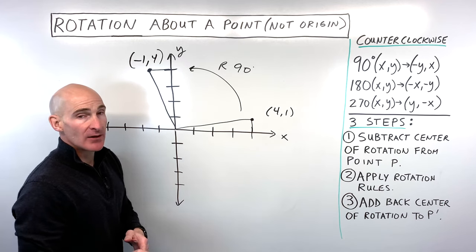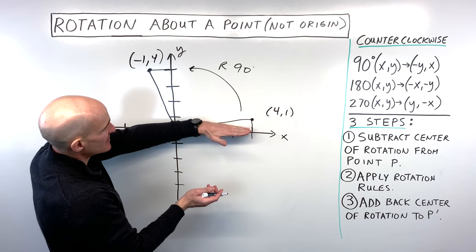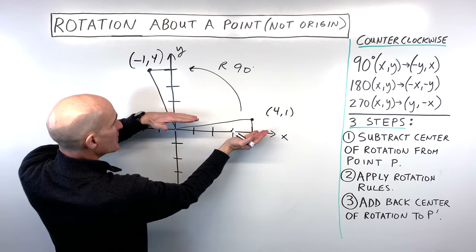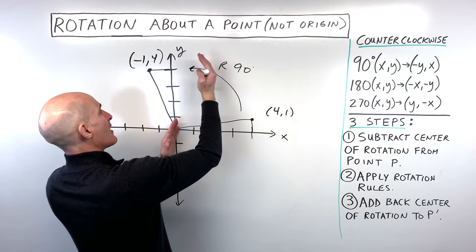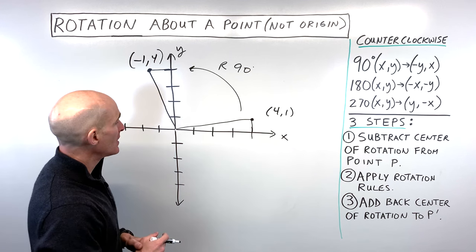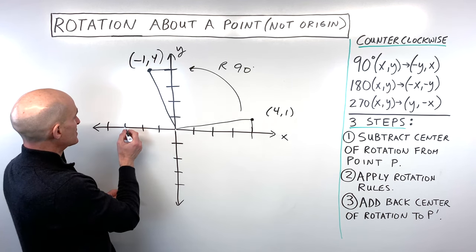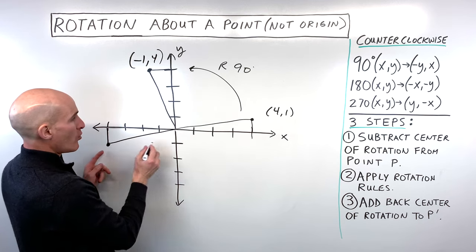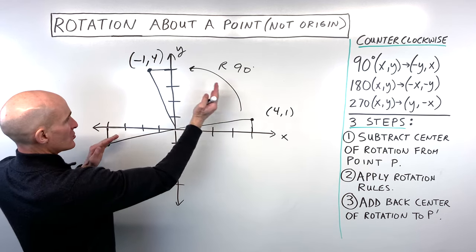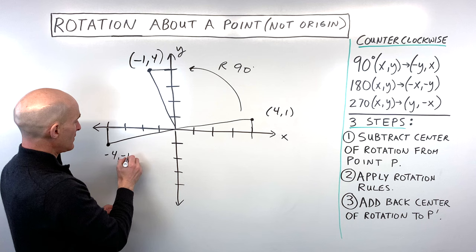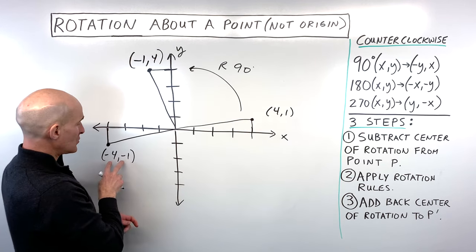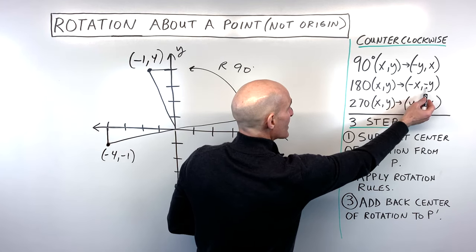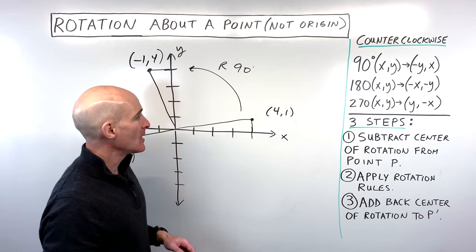For 180 degrees, imagine holding your finger at the origin and doing a half turn. Rotating the triangle a half turn puts it right about here. This point is now at (-4, -1). From our original point (4, 1), x and y are in the same positions — it's just that the signs are both opposite. So (x, y) → (-x, -y): same order, opposite sign.